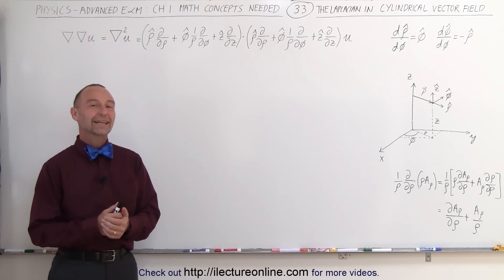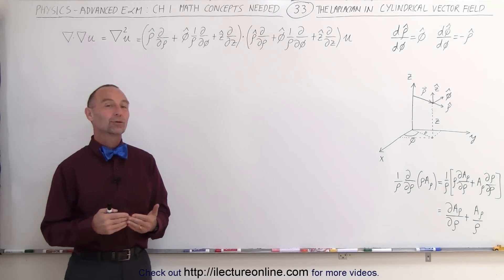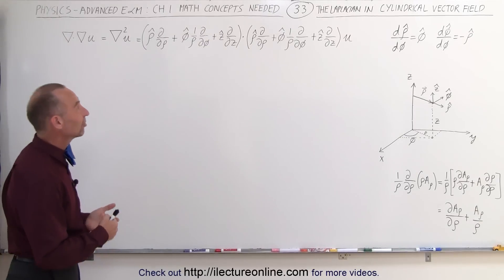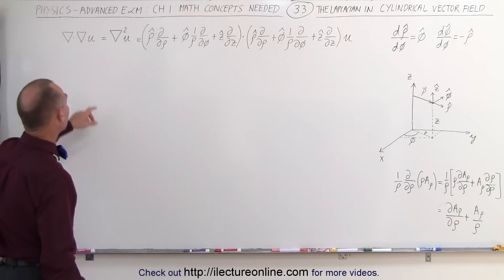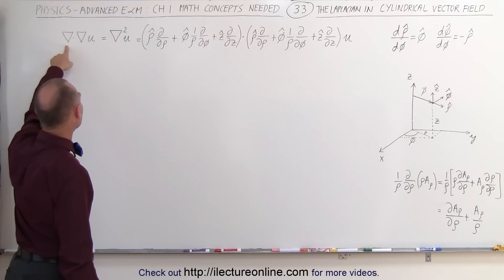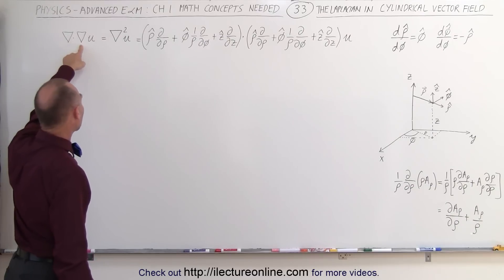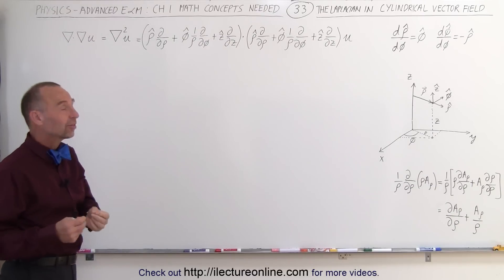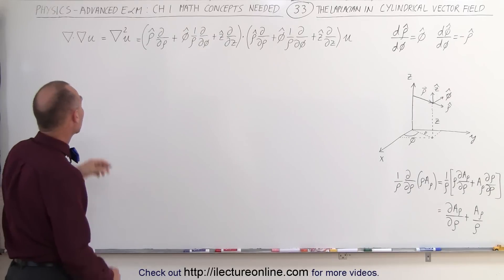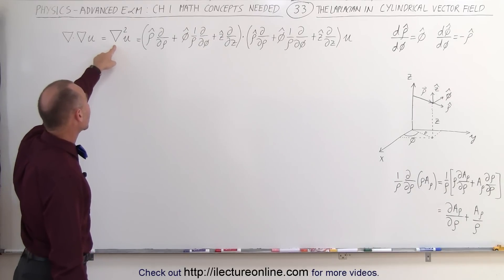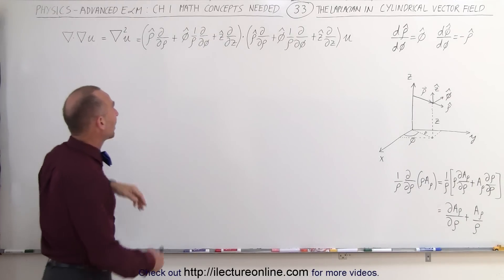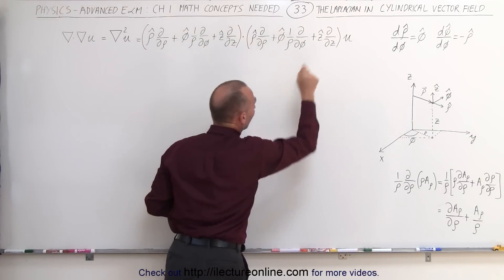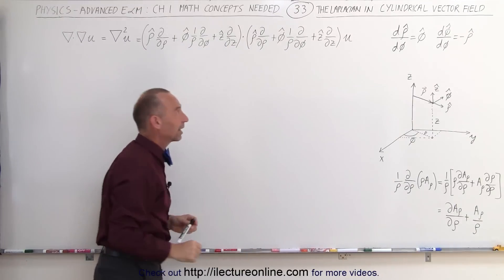Welcome to Electron Line. In this video we're going to show you what the Laplacian looks like in cylindrical coordinates. Here we have the del operator times the del operator operating on some scalar quantity u. This can be written as the del operator squared times u — basically the dot product between two del operators operating on a scalar quantity.